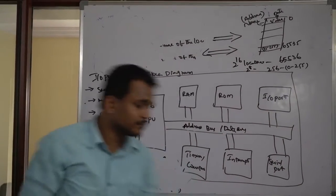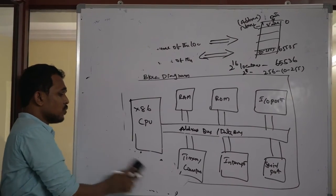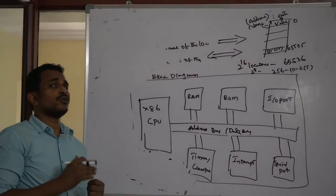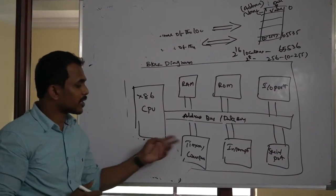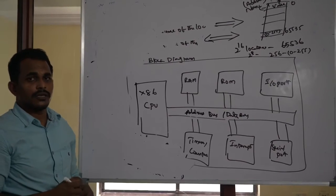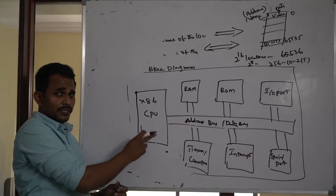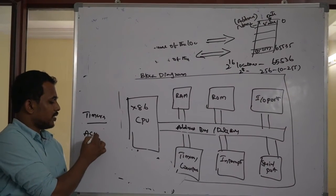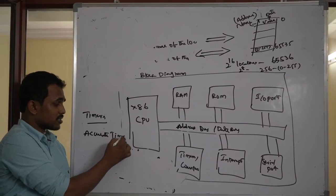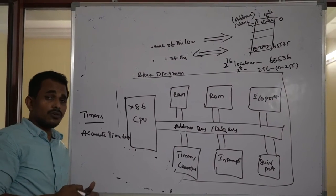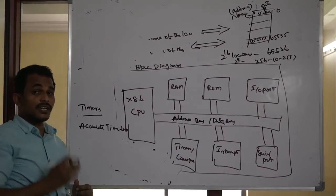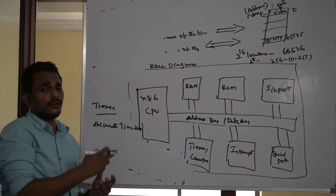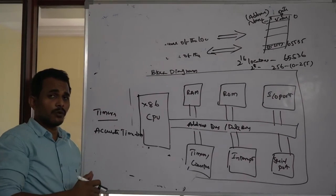Next, what about timers and counters? Timers are very important because when you want to make applications involving time operations — like controlling a load from morning to evening — you can access the timers feature from your microcontroller. Timers create accurate time delays, so whenever your application requires accurate time delays, you can use this timers concept. Counters help count external events from your device — whenever you need counter-based operations, you can use this counter feature.